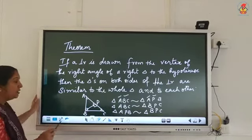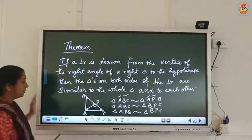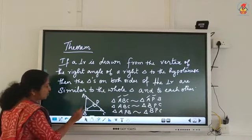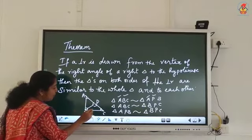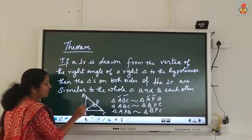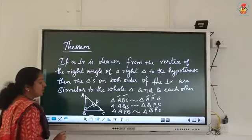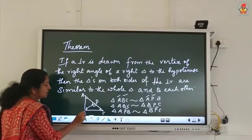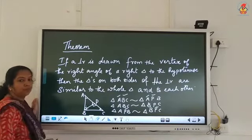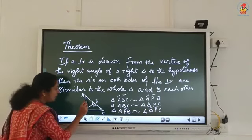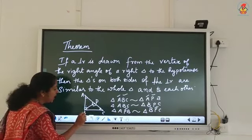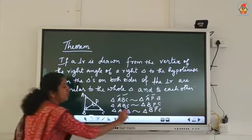Each of the small triangles is also similar to each other. When naming that, we should be careful: APB and BPC — P is the 90-degree angle, so P should be written together in the middle. When starting from A it is APB, and for the other it is BPC. Only the 90-degree angle P is common.